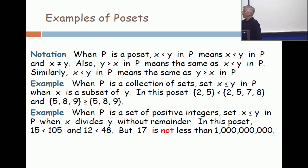Okay, second example. If you take a set of positive integers, you can say that X is less than or equal to Y in P when X divides Y without remainder. Now, you've got to really understand this last sentence. Because in this post set, 15 is less than 105. Why is that? What's the quotient? Seven, I hope. Yeah, seven, okay? It divides, quotient is seven and remainder is zero. So 15 is less than 105. 12 is less than 48 because 12 times 4 is 48. But 17 is not less than 1 billion.